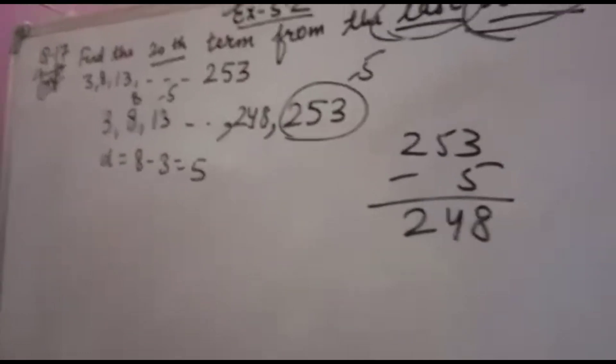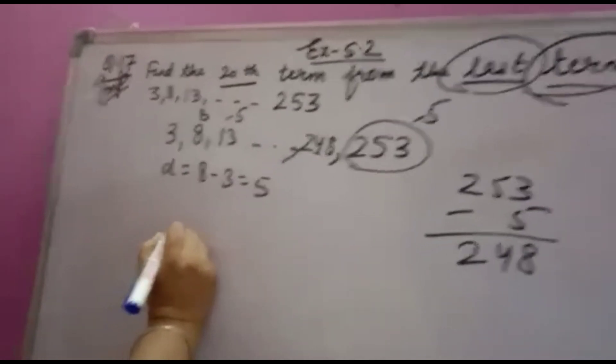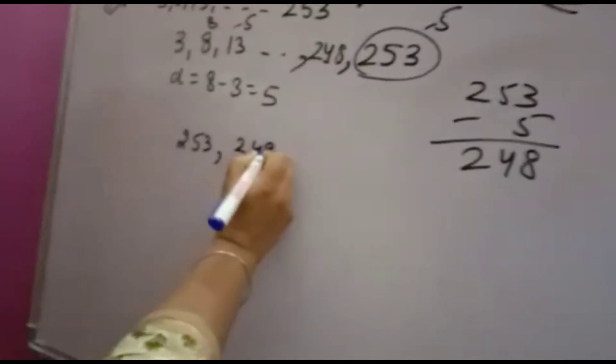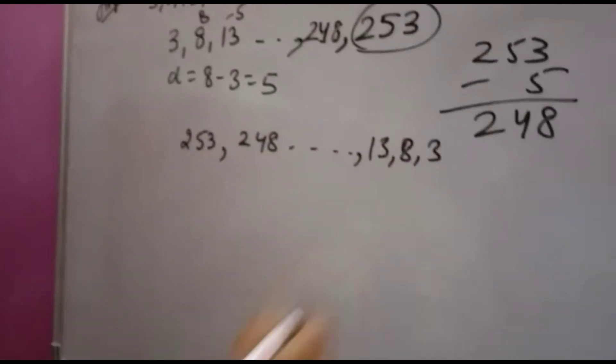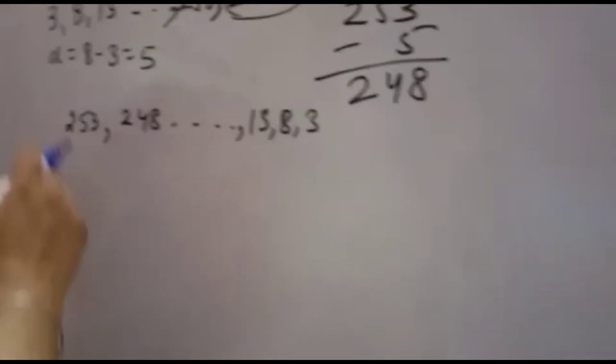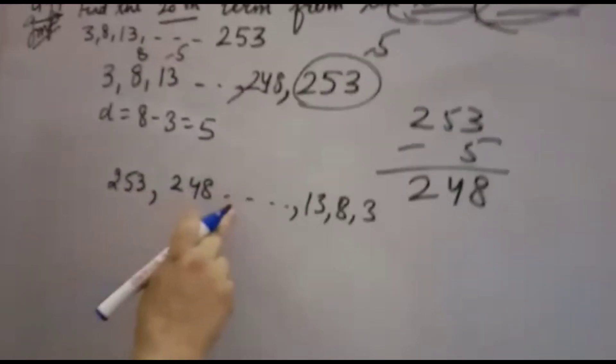Now whenever you have to find any term from the last term, you can reverse the series: 253, then 248, then dot dot, then 13, then 8, and then 3. Like this you can reverse the AP. Now 20th term from the last will be the 20th term from the front for this.